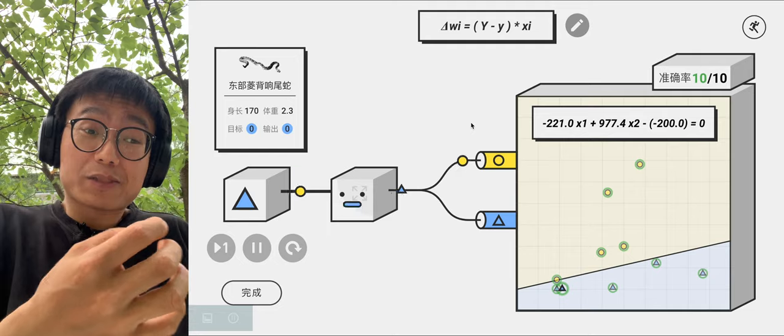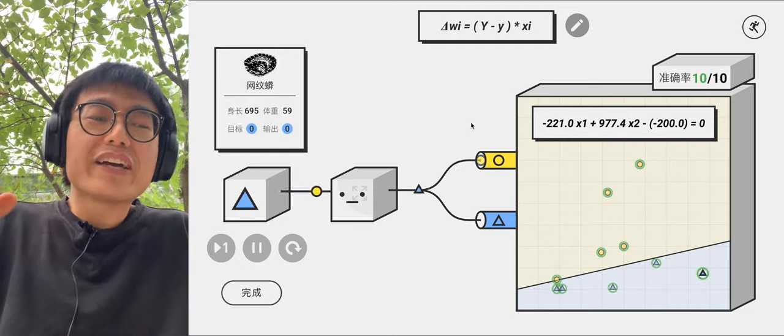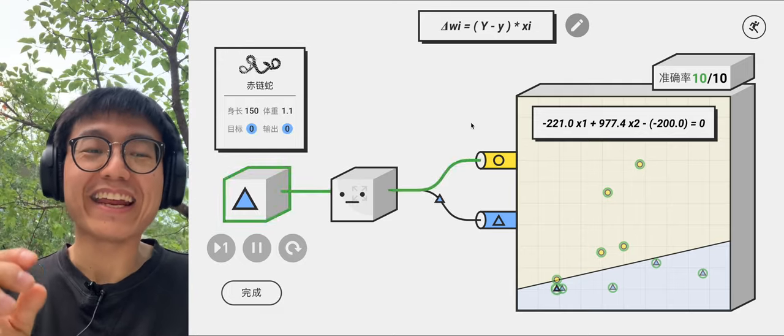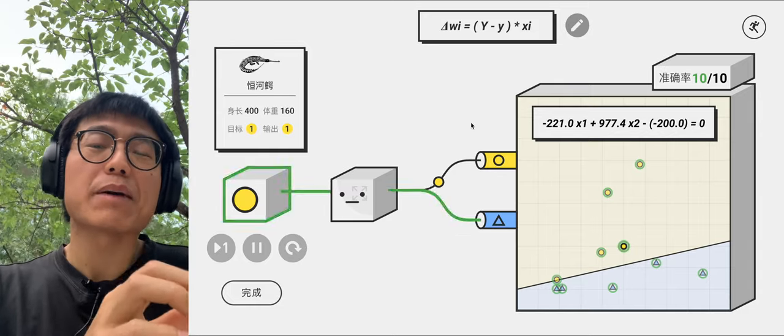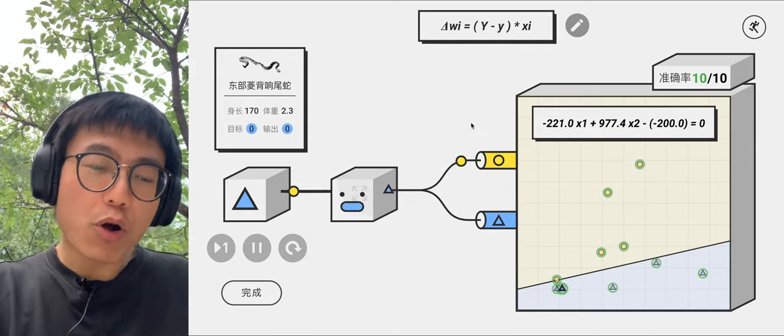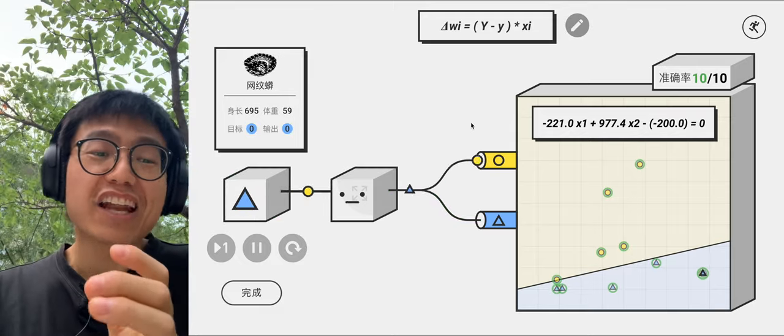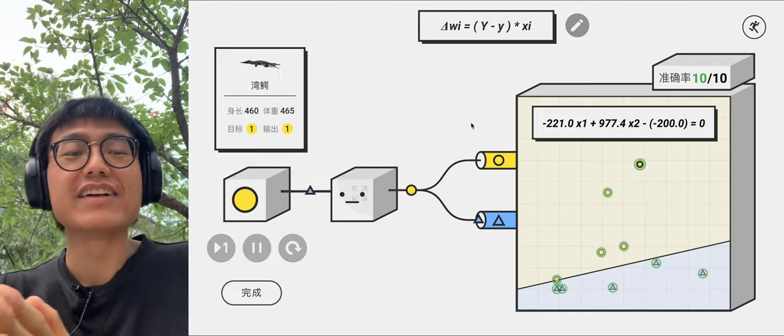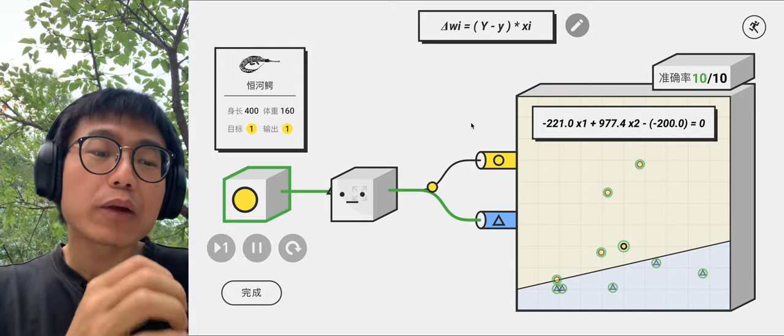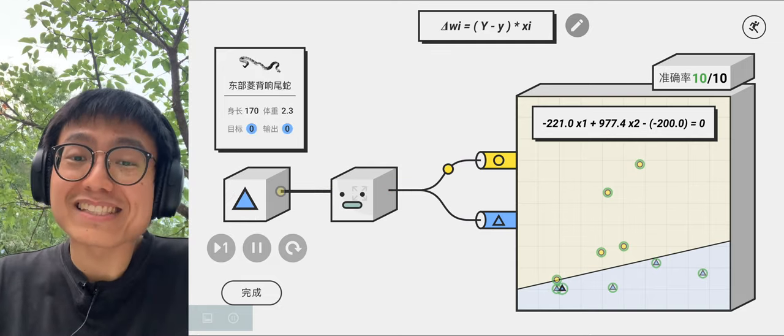Of course, only plus 1 is obviously not classified correctly, because it only adjusts the weight in the wrong direction. Therefore, the key is to let delta Wi adjust W1 and W2 in the right direction. If W is small, adjust it to the positive direction. If W is larger, adjust it to the negative. So the correct answer is delta Wi equals uppercase Y minus lowercase y times Xi. Well done!